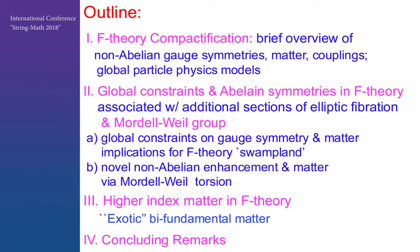Then I'll turn to recent work that addresses additional global constraints on gauge symmetries and corresponding matter representations when, in addition to non-abelian gauge symmetries, we also have abelian ones. Abelian gauge symmetries in F-theory are associated with different types of divisors, namely those related to additional sections in elliptic fibrations, and thus they are related to the Mordell-Weil group. I highlight the global constraints both on gauge symmetry and matter representations in the presence of non-abelian symmetry, but now also adding abelian ones, and also comment on potential implications for F-theory swampland.